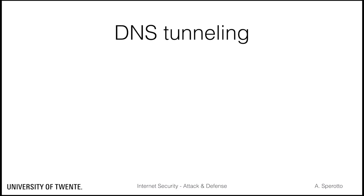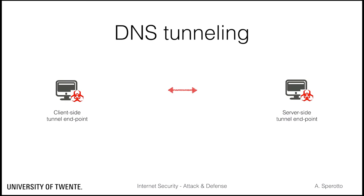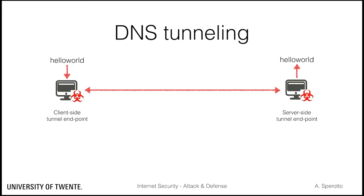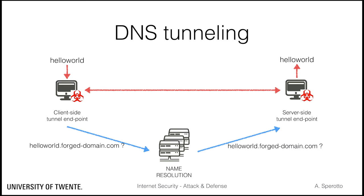Let's have a look at how DNS tunneling works and how we can exfiltrate data over it. At a high abstraction level, a tunnel allows communication between the client-side tunnel endpoint and the server-side tunnel endpoint. Data inputted at the client-side can be received at the server-side. Under the hood, the server-side endpoint runs a DNS server that is authoritative for a forged domain. The client-side endpoint embeds the data in a DNS query by manipulating the sub-domain part of the query. After the name resolution process, this query is delivered to the server-side endpoint, which will extract the data and use it.